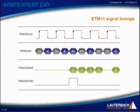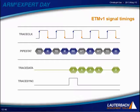Here we have the corresponding signal timing for an ETM v1. On top we have the clock signal. Then we have the execution status of the CPU pipeline, with flags such as trace disabled, instruction executed, and so on. In the middle we have an execution flag for an indirect branch. The trace signal indicates that there is valid address data on the trace data line.